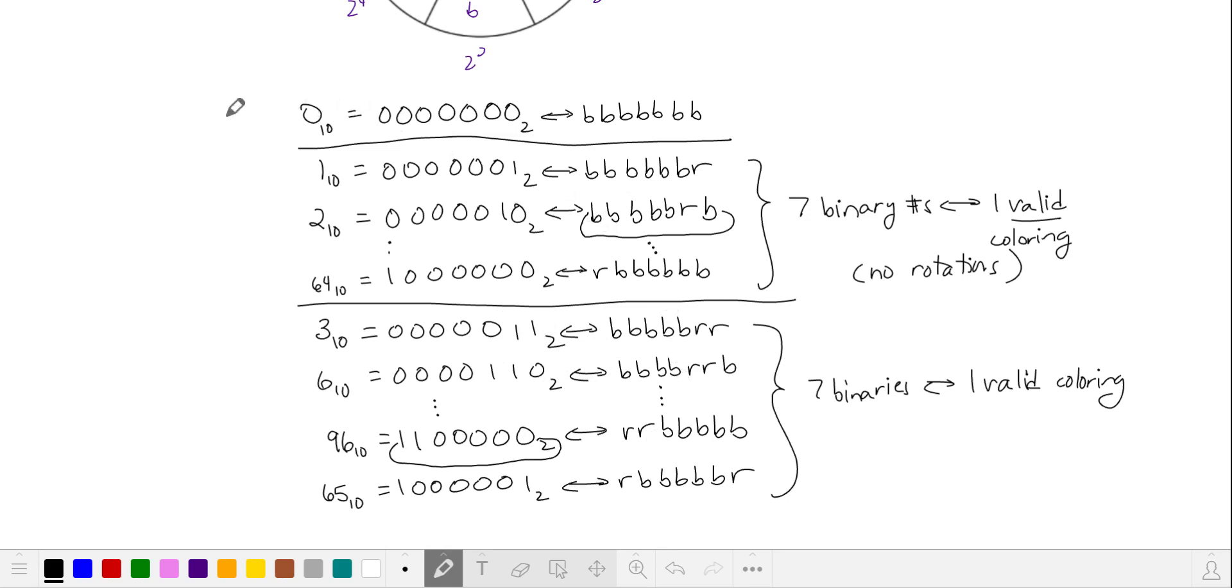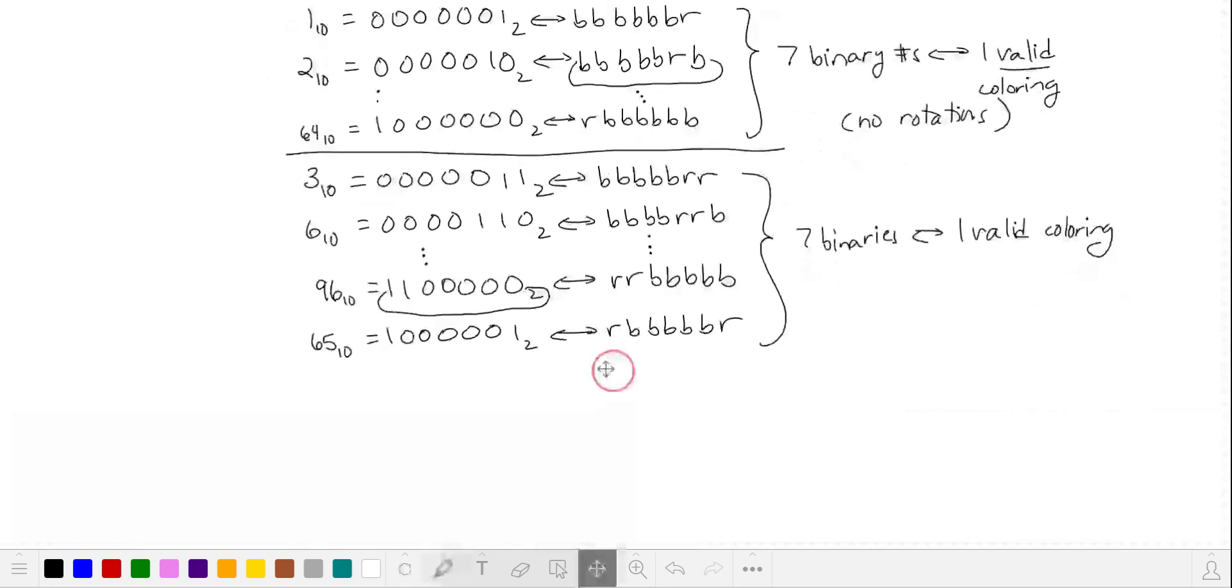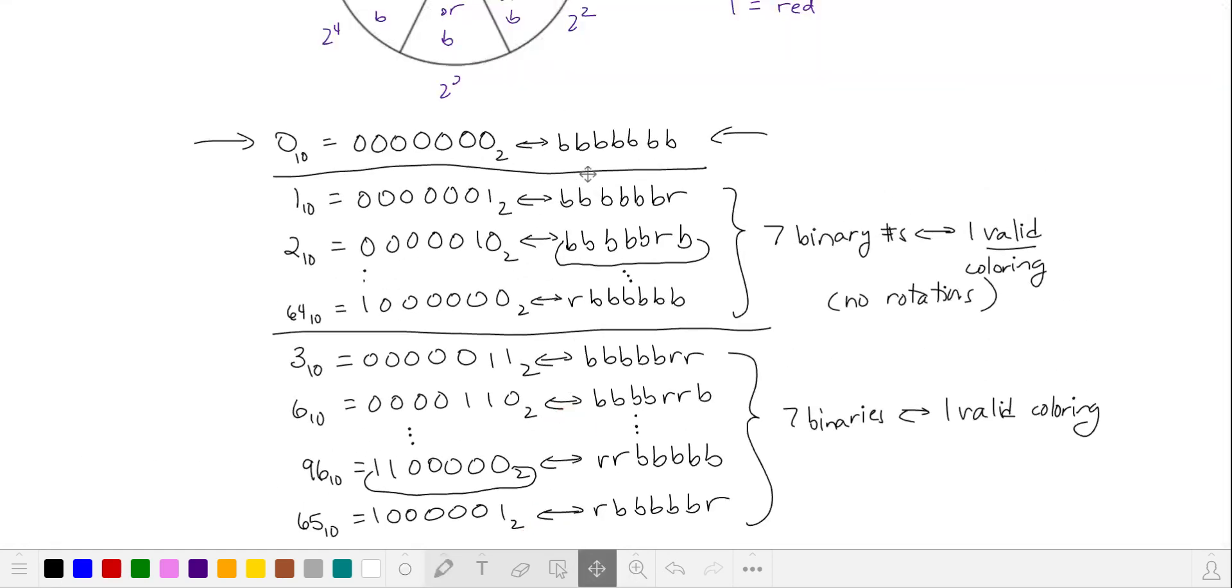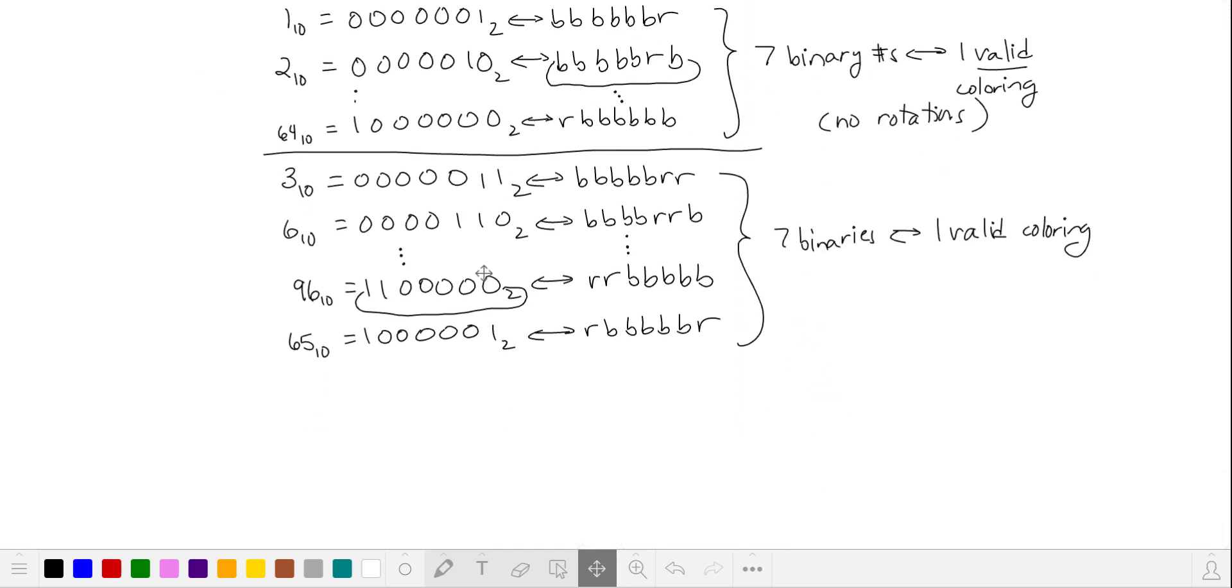And we can see that for every possible coloring corresponds to seven different binary numbers, except for the no blue section is when they're all blue and when they're all red. So what I'd like to do is take the number of binary numbers from zero to the largest seven digit binary number. And then I'm going to subtract out these two numbers that are all blue and all red, or these colorings that are all blue and all red. And then I'm going to take the remaining ones, divide by seven and add those two back in.